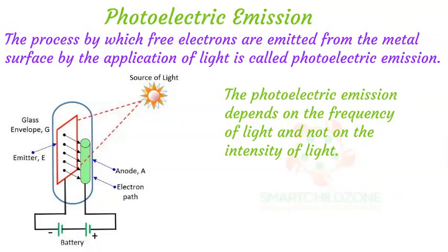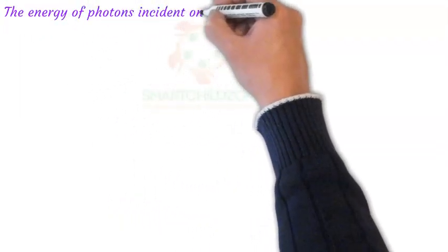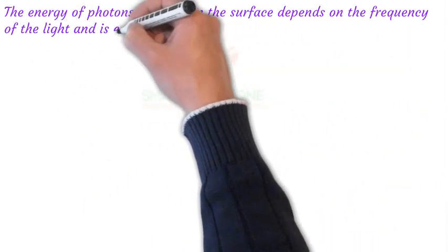Consider the figure which shows the phenomenon of photoelectric emission. The emitter and the anode are enclosed in an evacuated glass tube G. The anode is made of thin metal and is kept at positive potential relative to the emitter. When light is incident on the surface of the metal, electrons start ejecting from the emitter surface. The electrons move towards the positive anode and establish a current in the external circuit. The flow of electrons is maintained till the illumination is continued.